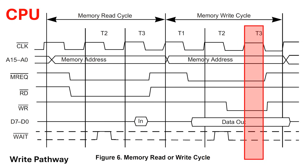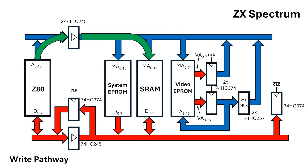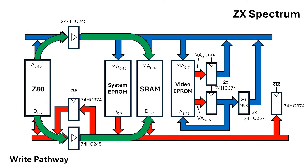Let's look at the write pathway from the Z80 to the static RAM. We have a Z80 with a pair of 74HC245 buffers on the address lines. These are hardwired so that the address always goes from the Z80 to the memory, but we can turn the output off when clock bar is low. Similarly, we have a 74HC245 on the data line, hardwired to go from the Z80 to the memory — this is our write pathway. We can generate the output enable for this write data buffer by ORing together clock and write bar from the CPU, and we also use this as the write signal on the static RAM.